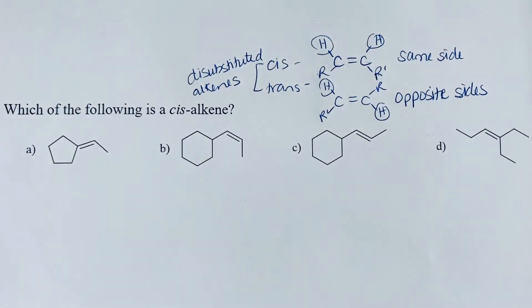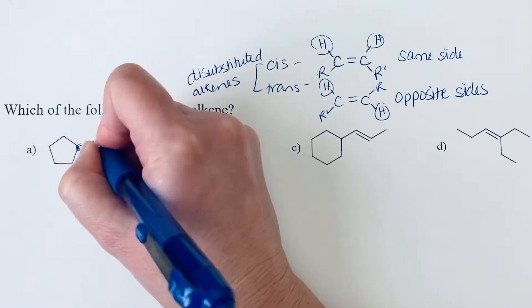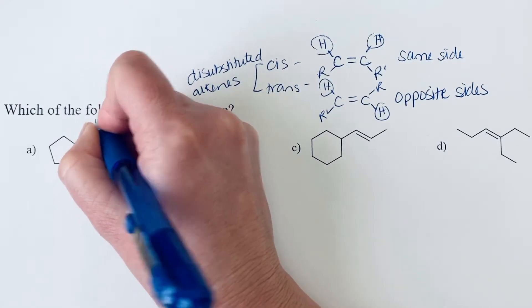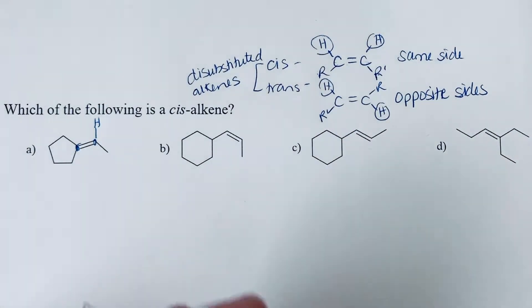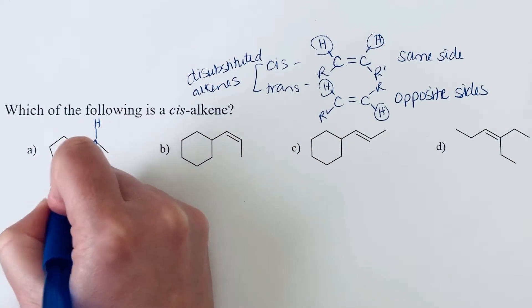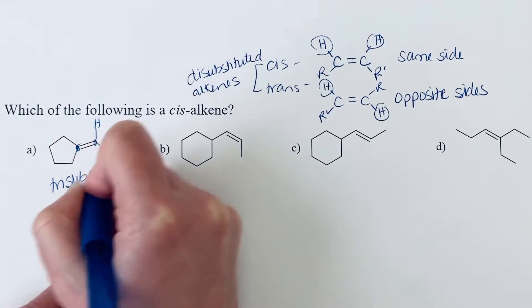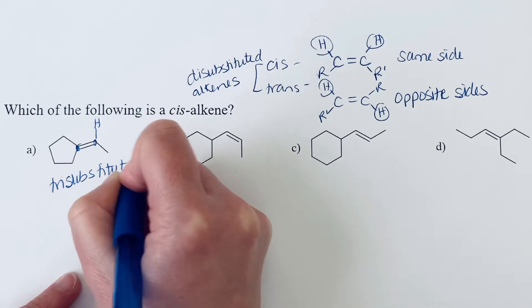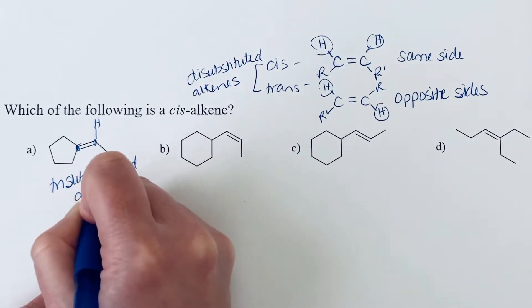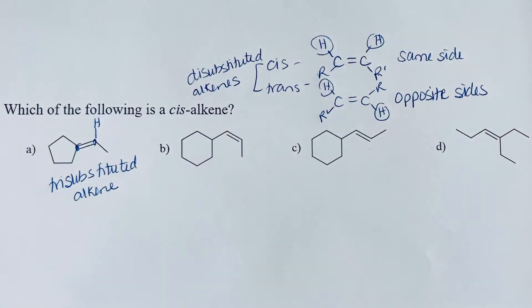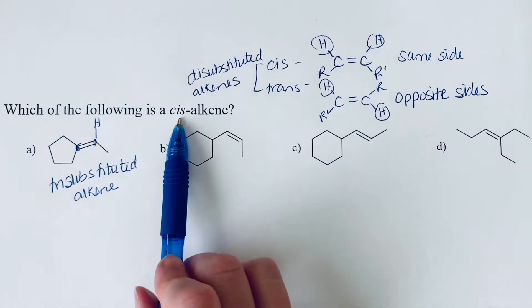So if we take a look at this first alkene, we actually only have one hydrogen. So this is a tri-substituted alkene. So we can't describe this via cis or trans.